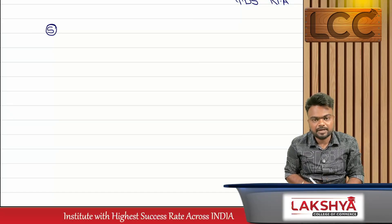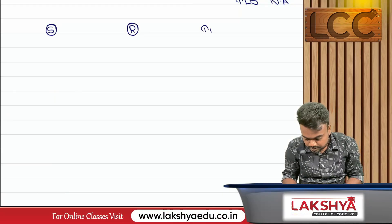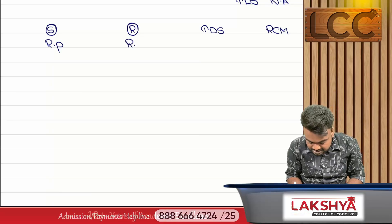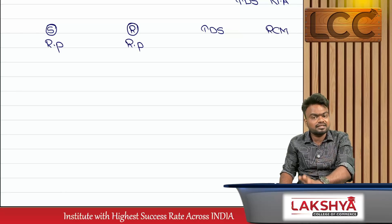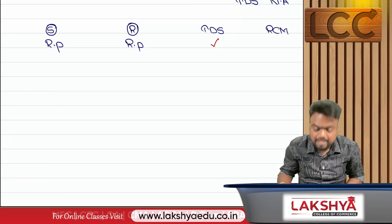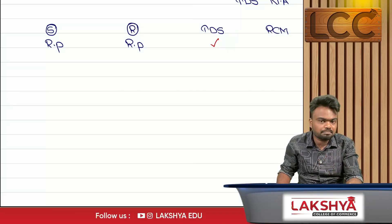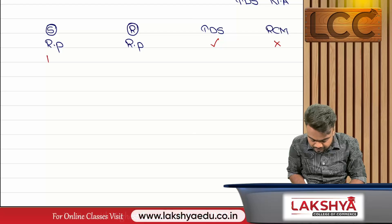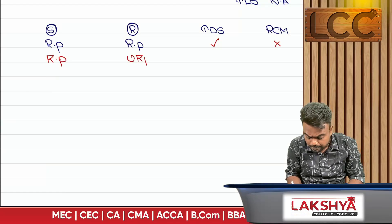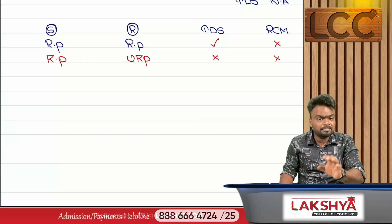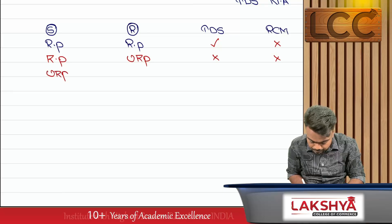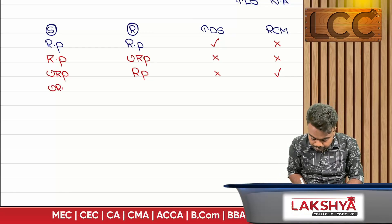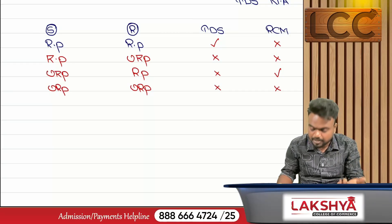To summarize all combinations: if both supplier and recipient are registered persons, TDS applies when value exceeds 2.5 lakhs, and FCM applies otherwise; RCM does not apply. If the supplier is a registered person and the recipient is unregistered, neither TDS nor RCM applies — FCM applies. If the supplier is unregistered and the recipient is a registered person, TDS does not apply but RCM applies. If both are unregistered persons, there is no concept of GST — nothing applies.